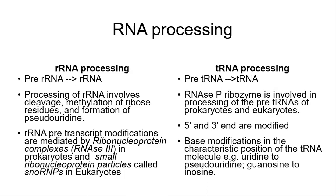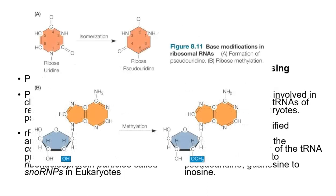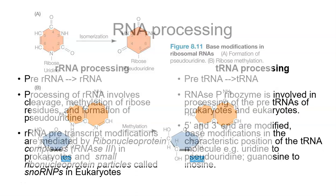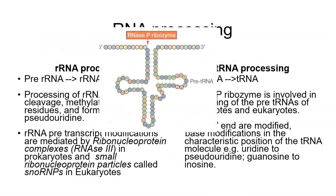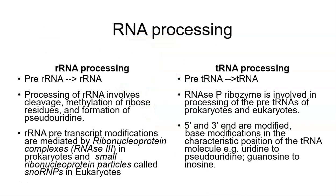There are two segments to consider: rRNA processing and tRNA processing. In both molecules, a pre-rRNA or pre-tRNA is processed and finally converted into a functional rRNA or tRNA molecule. The processing of rRNA involves cleavage, methylation of the ribose residues, and formation of pseudouridine. The tRNAs of both prokaryotes and eukaryotes are modified by RNase P. The pre-transcript modifications of rRNA are mediated by ribonucleoprotein complexes called RNase 3 in prokaryotes, whereas small ribonucleoprotein particles called SNORNPs play a major role in eukaryotes.